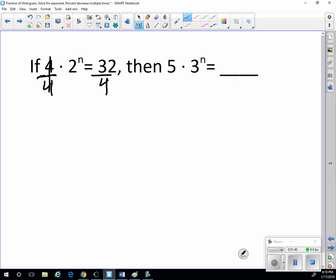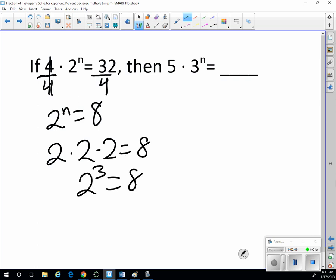So that's just 1. So we just have 2 to the n equals 32 divided by 4 would be 8. So now we're looking for some power of 2 that equals 8. Well, 2 times 2 is 4 times 2 equals 8. So that's 2 to the 3rd. So n is the power, which in this case is 3.